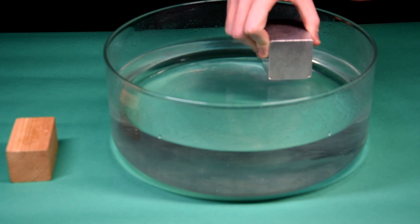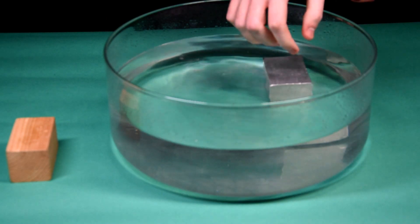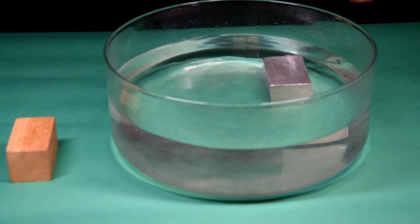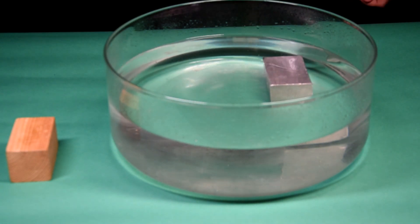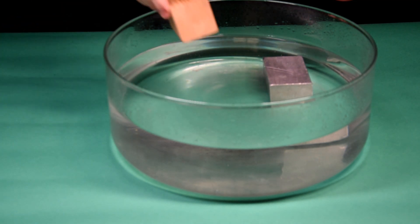If the density of an object is high compared to the density of water, then the object will sink. But if the density of the object is lower than the density of water, then that object will float.